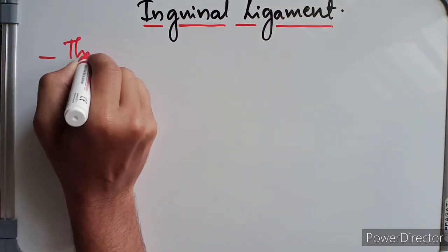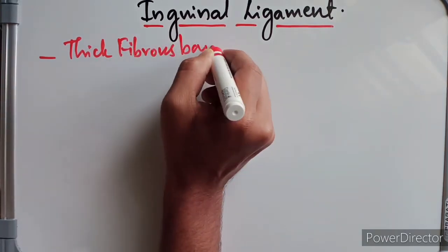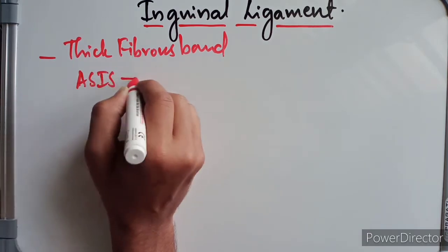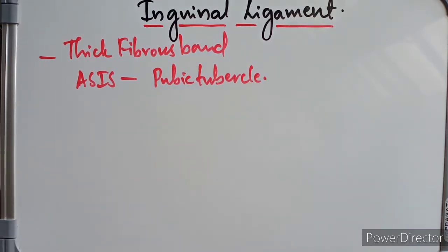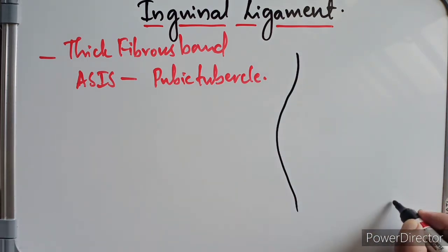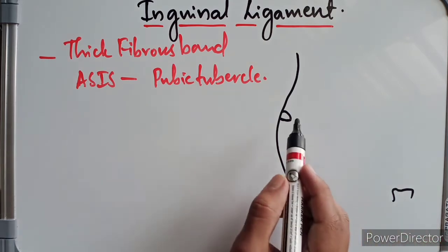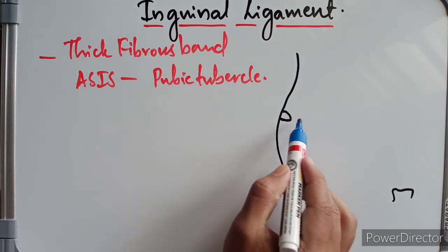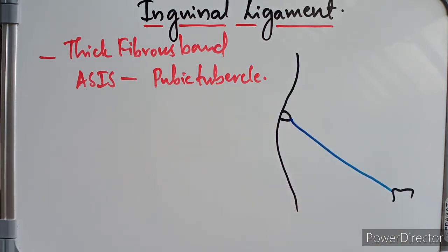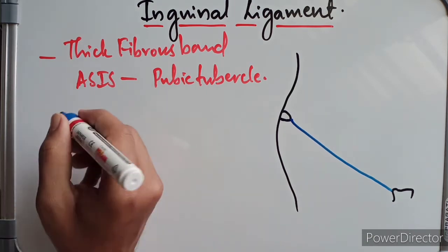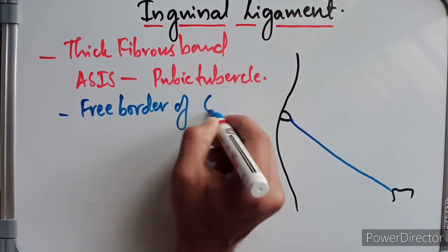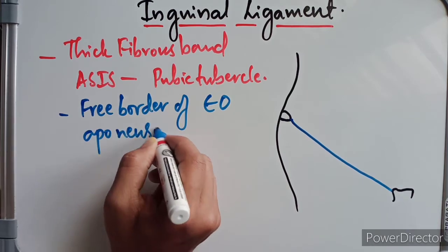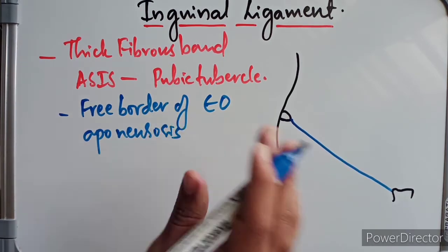The inguinal ligament is a thick fibrous band which extends from the anterior superior iliac spine to the pubic tubercle. It is formed by the lower free border of the external oblique aponeurosis.